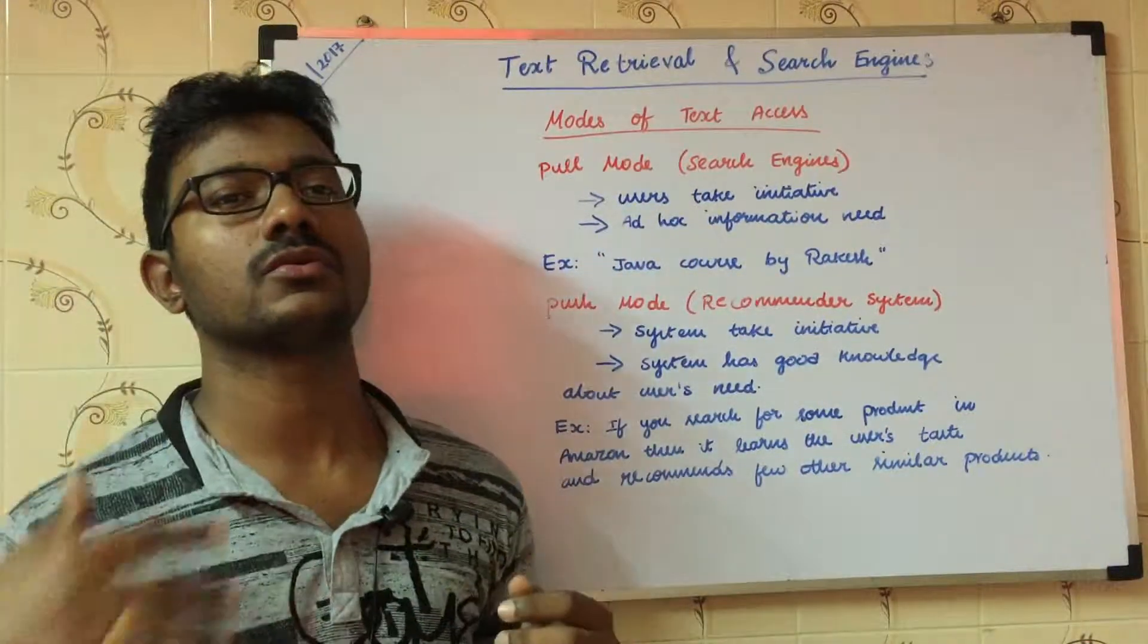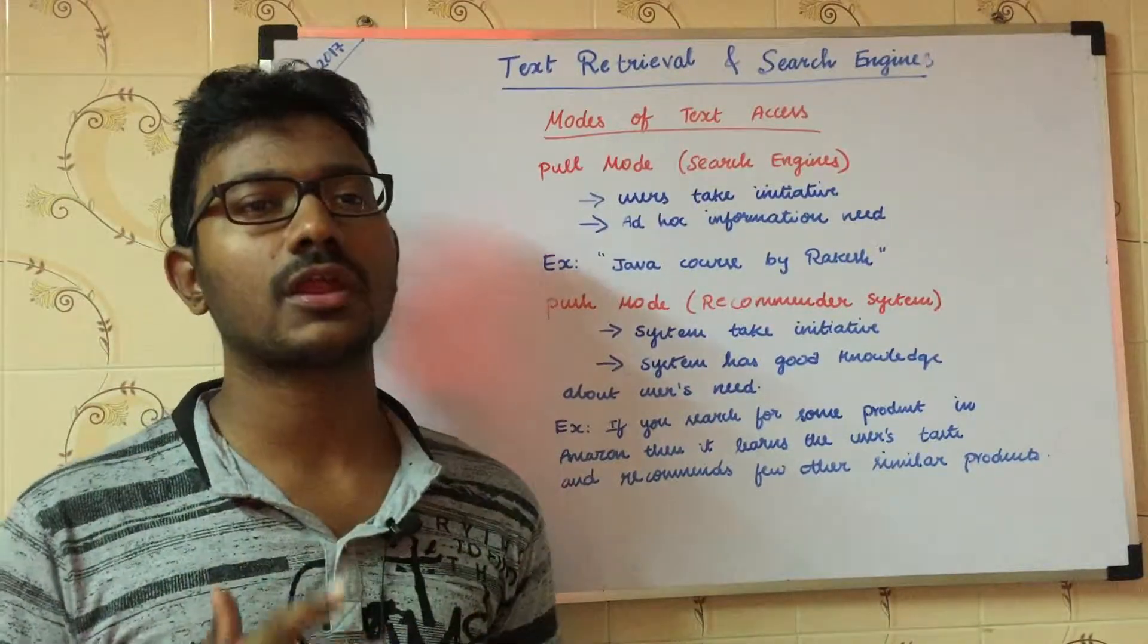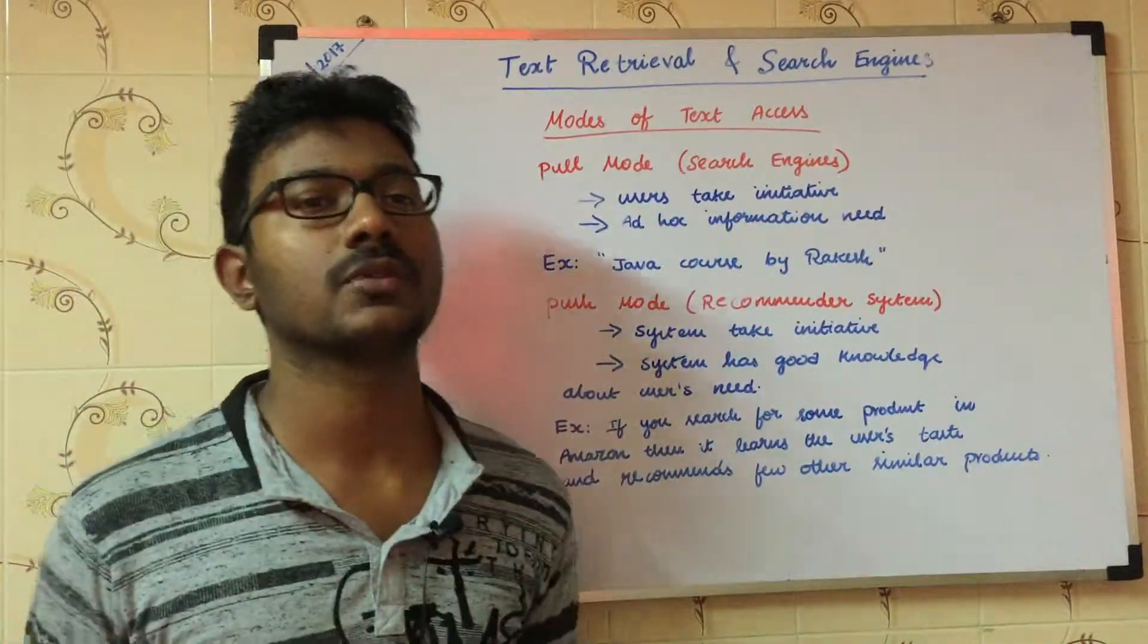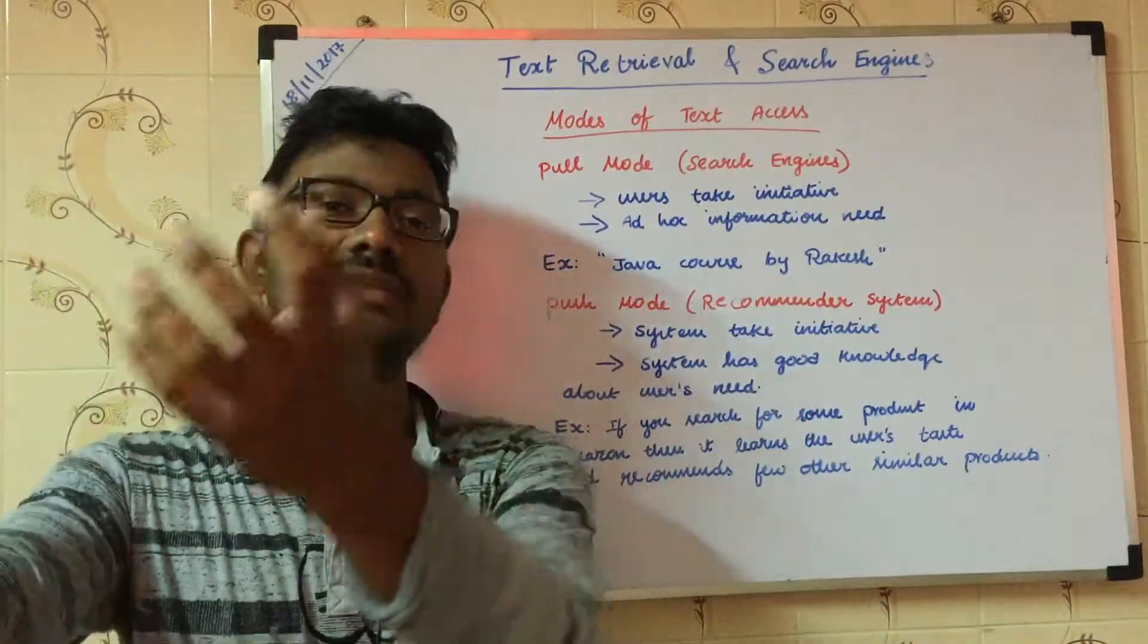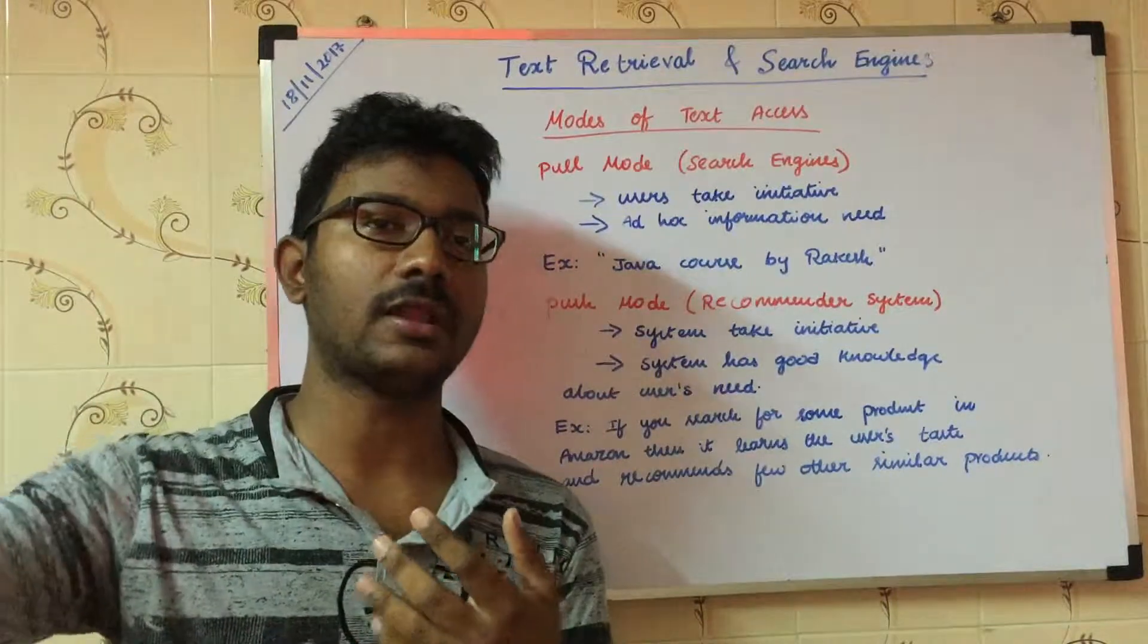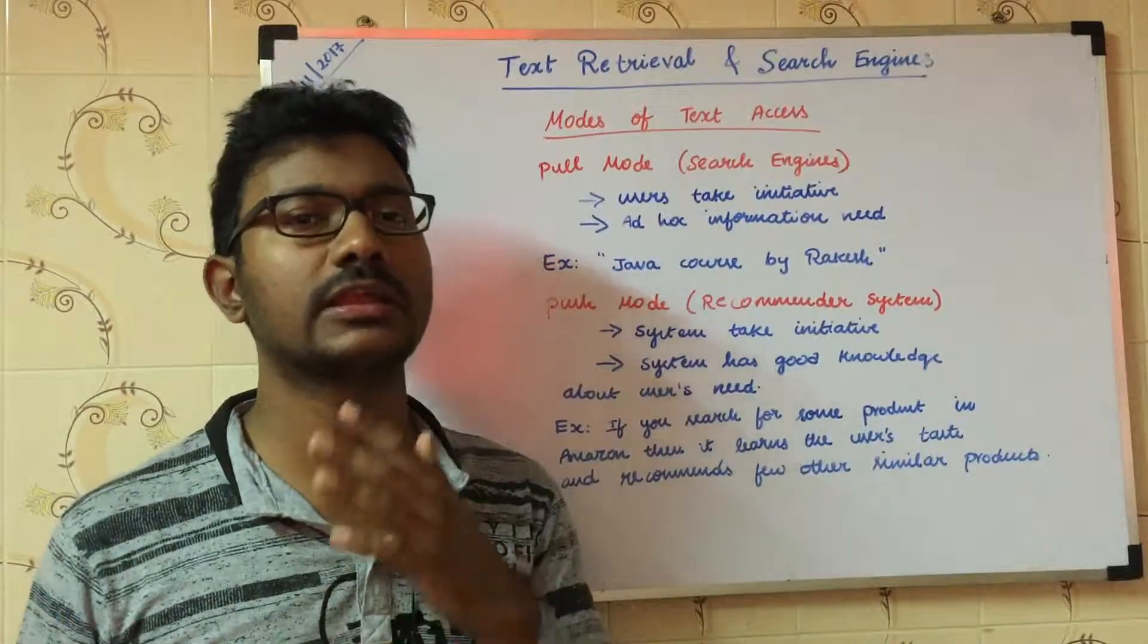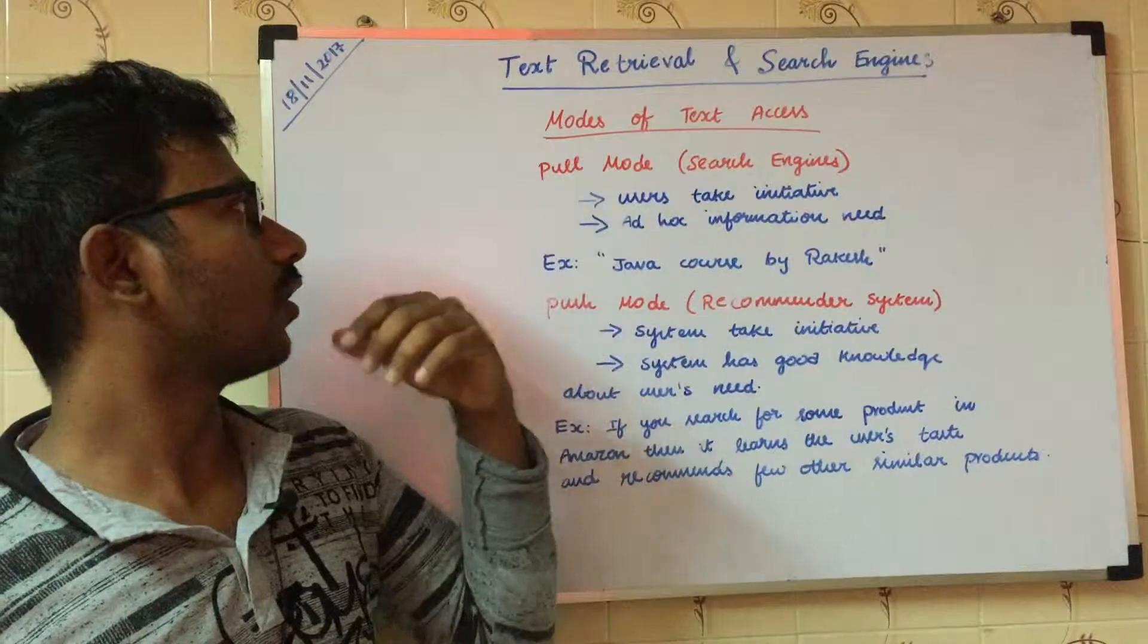So here users take the initiative. We are the ones trying to search something and trying to see something. So this is called pull mode. Here users take the initiative. What this pull mode conveys is we are trying to pull the data from some machine or from somewhere. That data can be either videos or text or documents or anything. That's the reason why this is called pull mode.